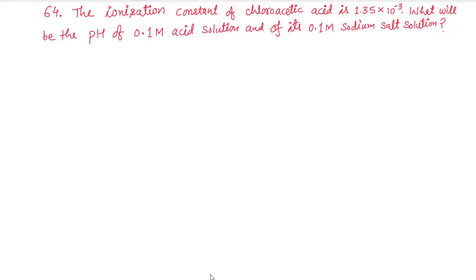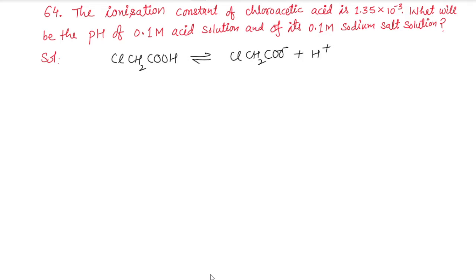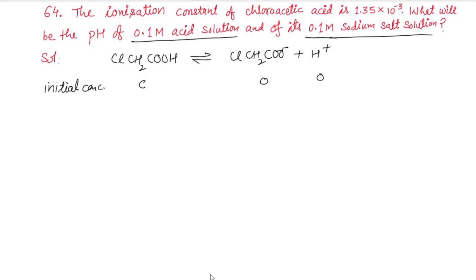Welcome back to my channel. Today's question is from ionic equilibrium, question number 64. The ionization constant of chloroacetic acid is given. Chloroacetic acid is a weak acid, so it dissociates into chloroacetate ion and H⁺ ions. We have 0.1 molar acid for the first case where we calculate pH, and 0.1 molar sodium salt for the second case where we also calculate pH.